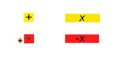And the red represents the negative tile, the negative unit tile. So if you have 5 of these, it would represent a value of negative 5.